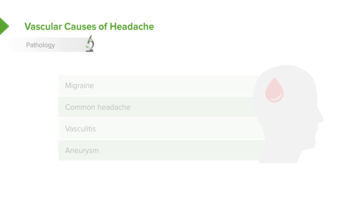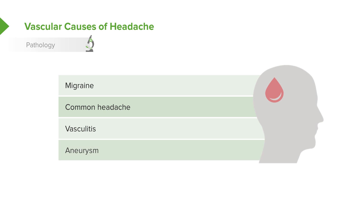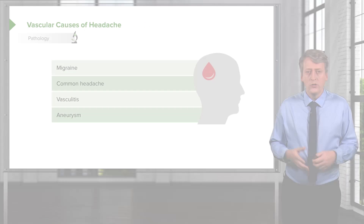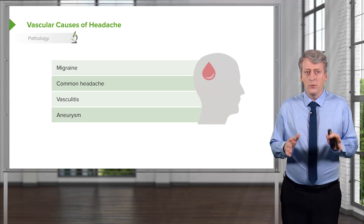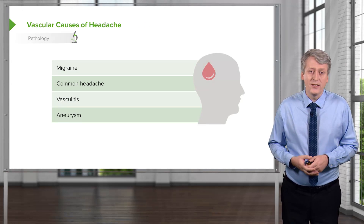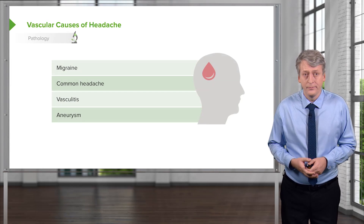There are many vascular causes of headaches including migraines, the common headache, vasculitis, or aneurysm. Aneurysm, while rare, is extremely severe. So distinguishing between these types of headaches is important.